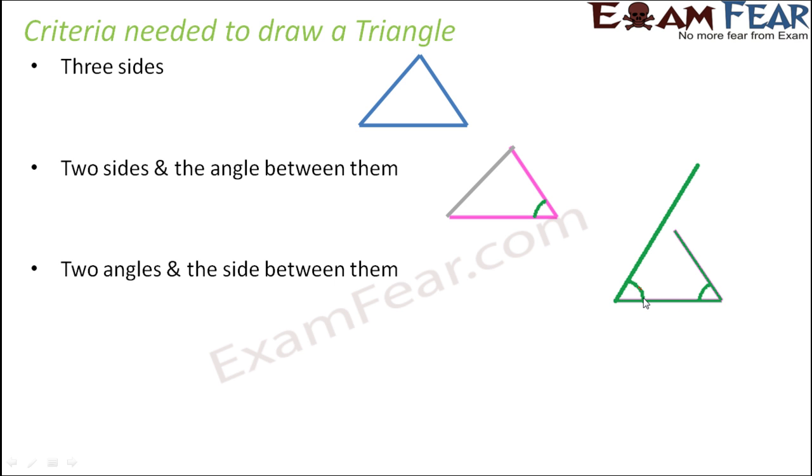So if you know this much information, you can again draw a triangle like this. So you basically see these two lines would meet at some point and then it makes a triangle.